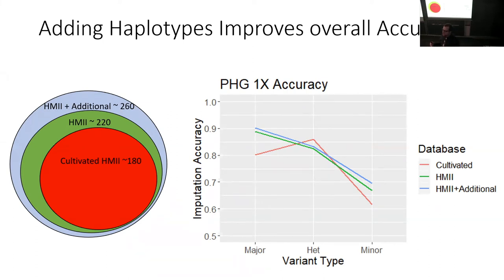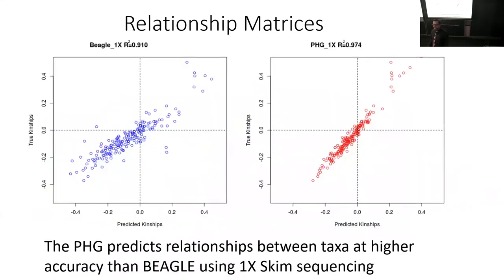Not only do I want good variant call accuracy, I'd also like to reproduce relationships, because when we do genomic selection, we need to make sure we're predicting true relationships. I compared whole genome high-depth relationship matrices made from whole genome high-depth sequence to ones predicted by both Beagle and the PHD, using 1x sequencing. I found that the PHD had a much higher correlation in the relationships it's reproducing.